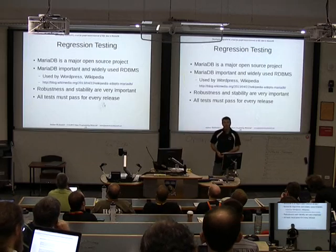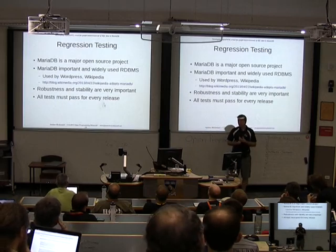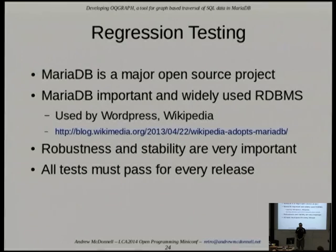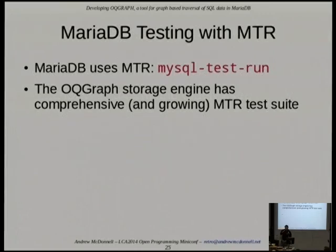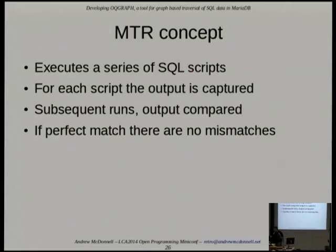We've recently — after about a year of effort — had OQ Graph merged into MariaDB. Before they allowed that, we had to have a fairly comprehensive test suite. MariaDB is used by WordPress and Wikipedia — pretty major sites that can't have their database crashing. So every test has to pass. MariaDB features a tool called MySQL Test Run (MTR), which is a Perl-based tool that lets you have a whole suite of SQL test scripts, runs them, compares the output, and if anything varies or there's a crash, the test fails.